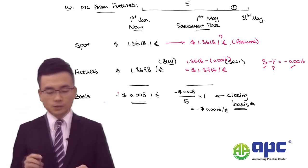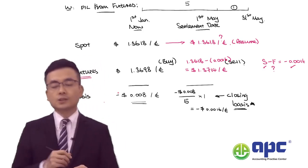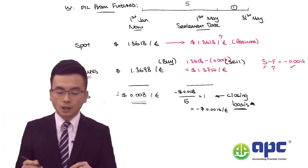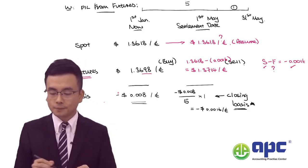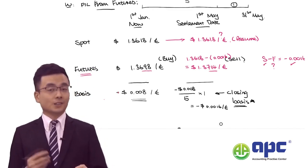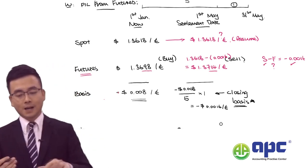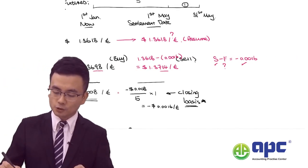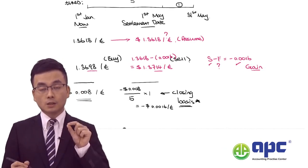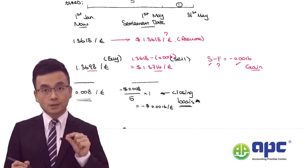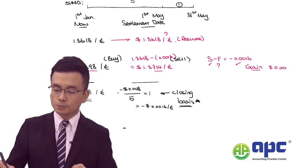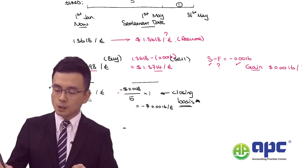Now we need to work out the futures gains and losses. Think about it this way: you buy at 1.3698, but you can sell at 1.3714 — you can sell for more. So you end up having a gain in the futures market. The gain would be 1.3714 minus 1.3698, which is $0.0016 per euro.